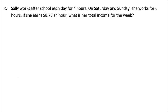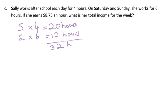Let's have a look at this one. So Sally works after school each day for 4 hours. That's after school. School's 5 days a week, and she works 4 hours each day, so that would be 20 hours. Then on Saturday and Sunday, so 2 days, she works 6 hours. So 2 days she works 6 hours, so that is 12 hours. So all together she works 32 hours every week.